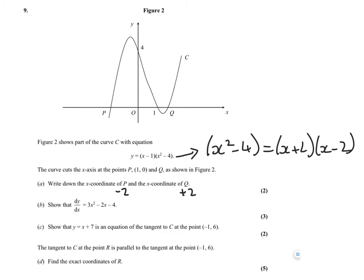Show that dy dx is this. You need to multiply out the brackets before you do anything, so multiply out the brackets. You get something like this, you get X cubed minus X squared minus 4X plus 4. Differentiate that and it will give you the answer they've shown you.